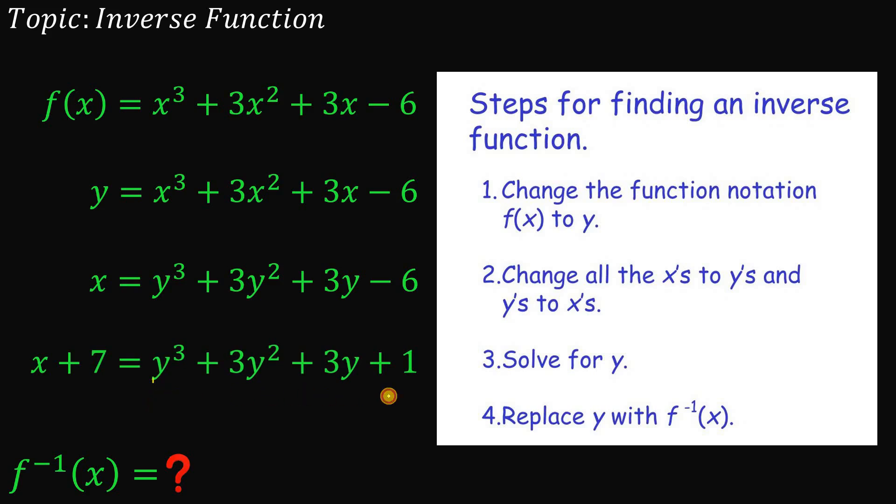Now why we add 1 on both sides? Because recall, if we expand (n + 1)³, we have n³ + 3n² + 3n + 1. This is similar to y³ + 3y² + 3y + 1. If we replace this n with y, this y³ + 3y² + 3y + 1 is just (y + 1)³.